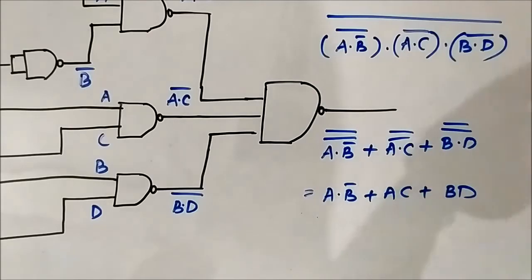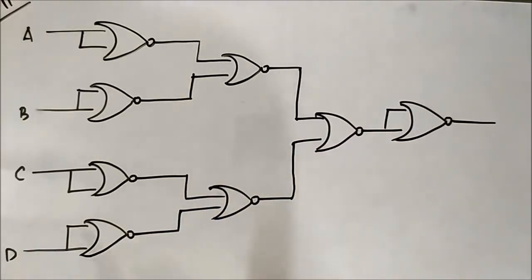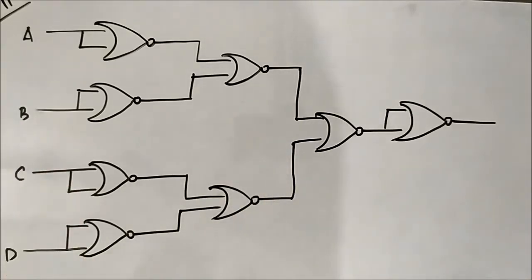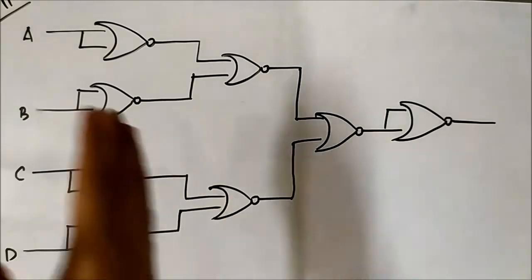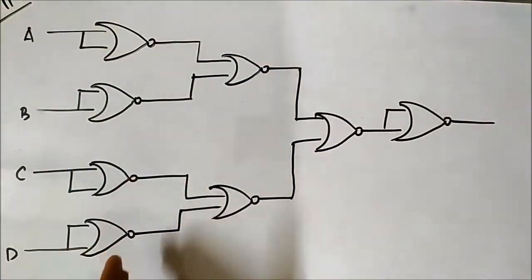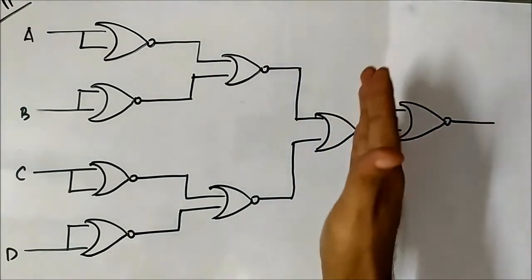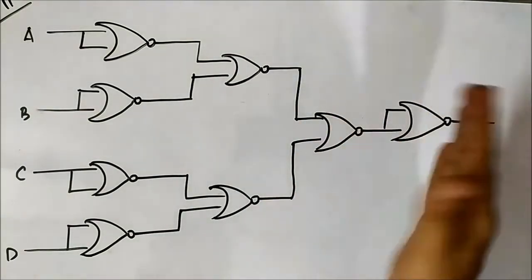This is the final simplified output — a different type of question which consisted of only NAND gates. Now this is the eleventh question. The previous question involved only NAND gates; this one consists of only NOR universal gates. We will again divide it into layers: the first layer consisting of four NOR gates, the second layer of two NOR gates, the third layer of one NOR gate, and the fourth layer being the final NOR gate.